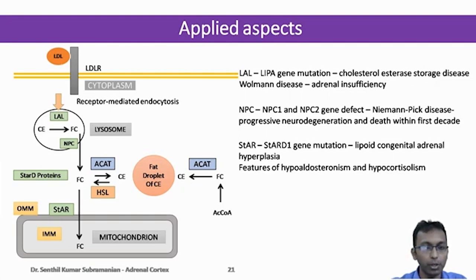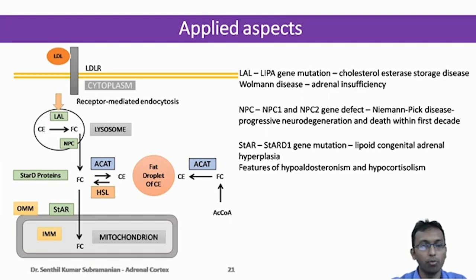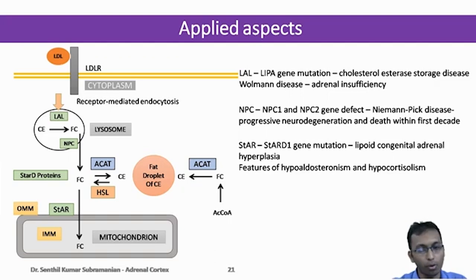Mutations in the StAR protein lead to lipoid congenital adrenal hyperplasia. The features will be akin to hypoaldosteronism and hypocortisolism. Defect in any one of these proteins leads to decreased synthesis of adrenocortical hormones and similar clinical features.